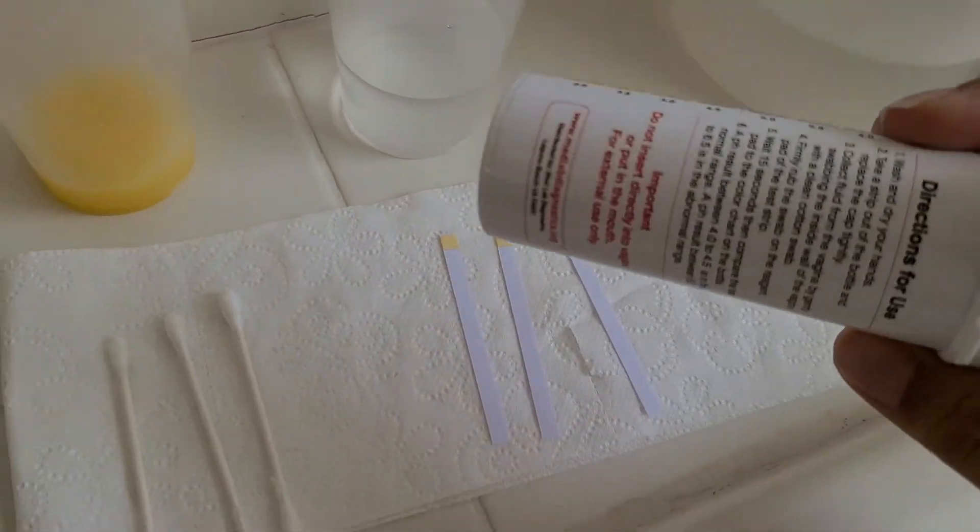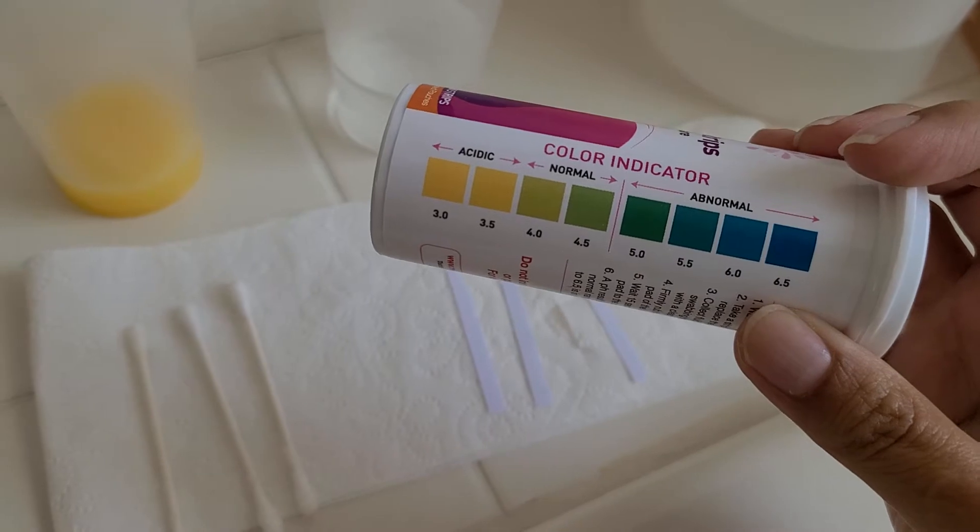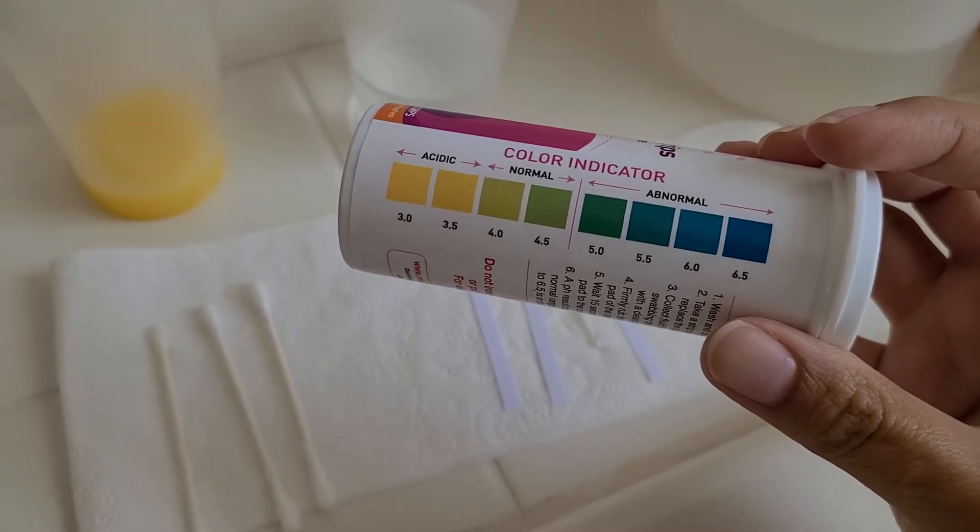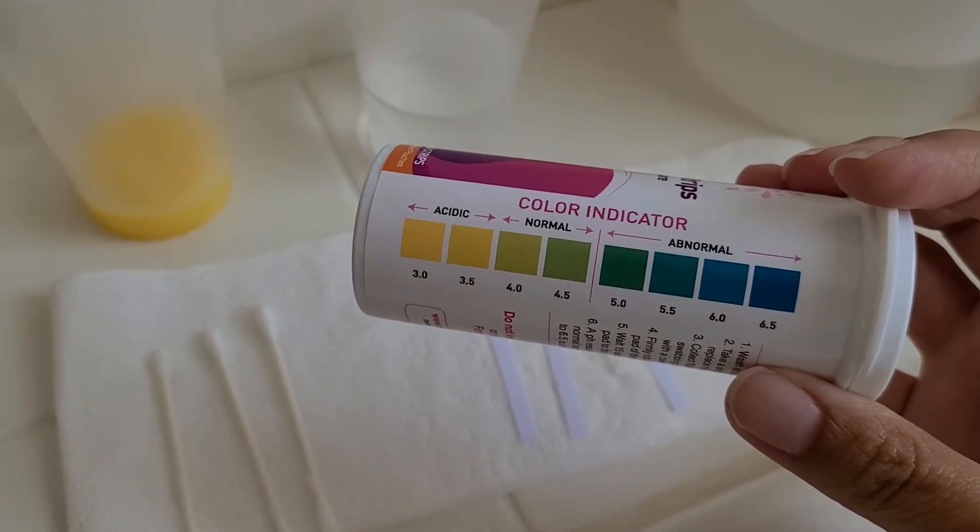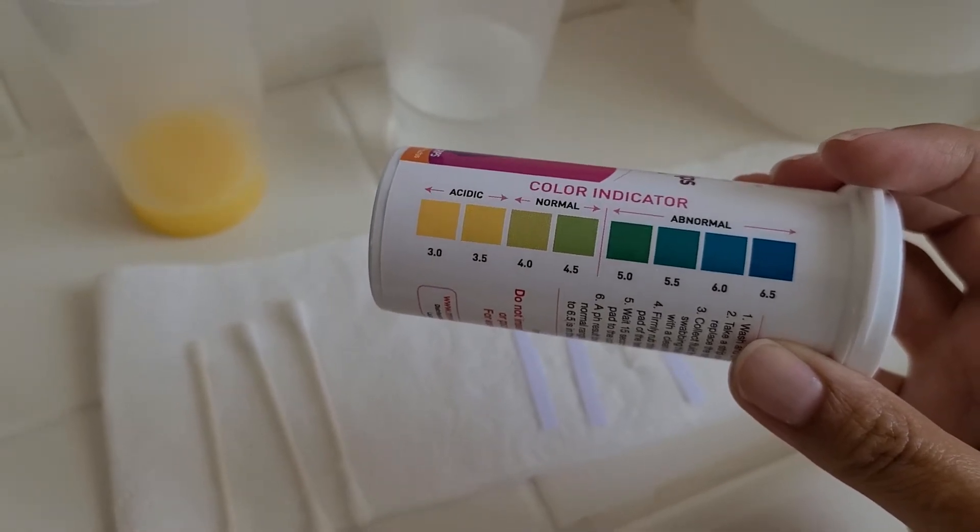There's a color chart right on the bottle right here that shows you acidic results, normal results, and abnormal results. So for vaginal pH, anything in the 4 to 4.5 range is normal.